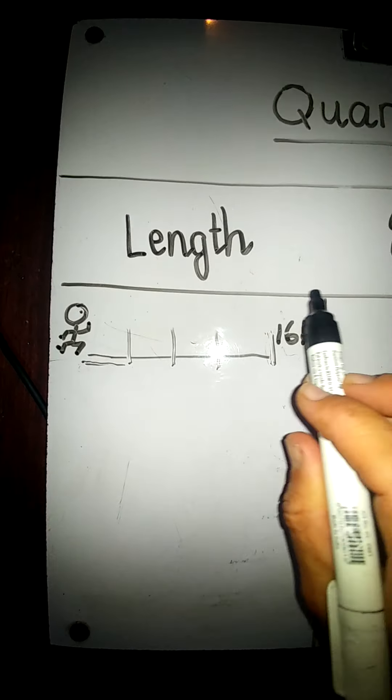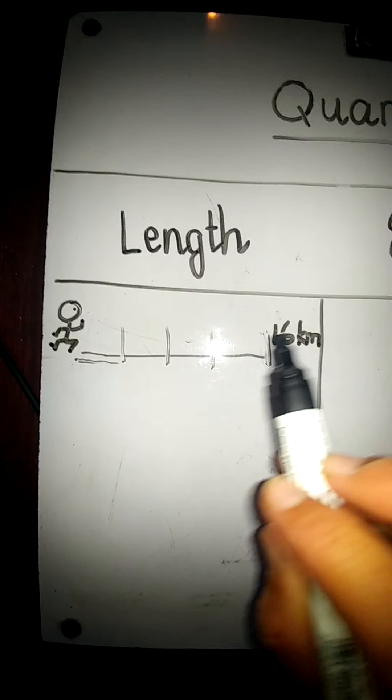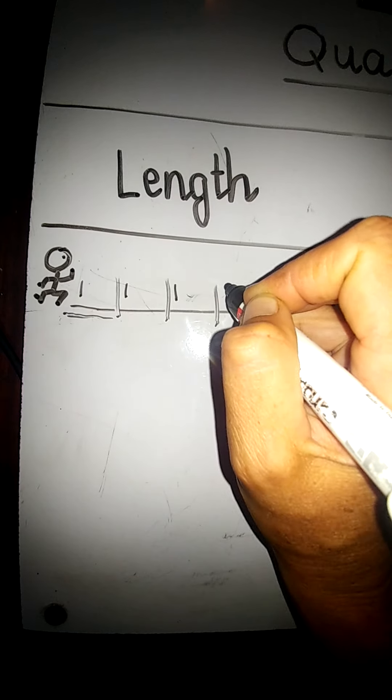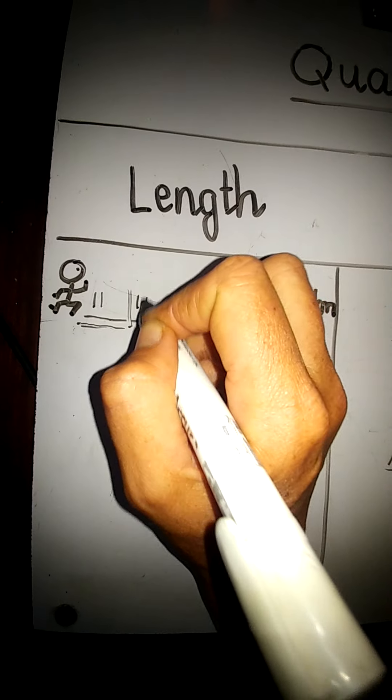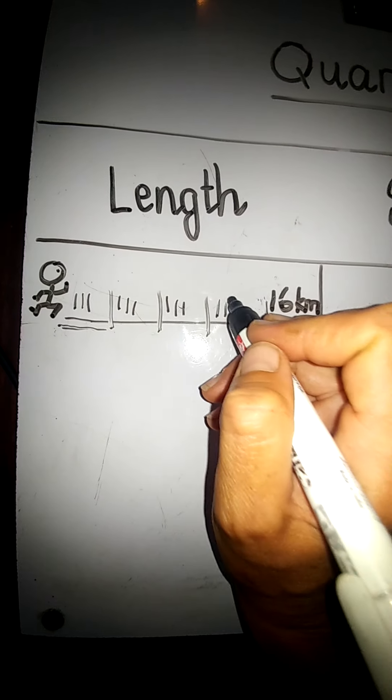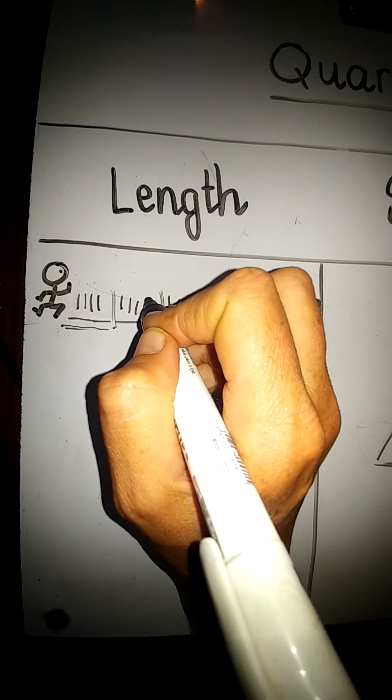Now we have to divide the 16 kilometers into these four parts. So one kilometer, two, three, four, five, six, seven, eight, nine, ten, eleven, twelve, thirteen, fourteen, fifteen, sixteen.